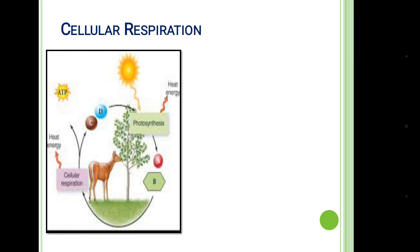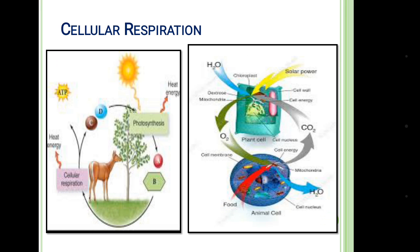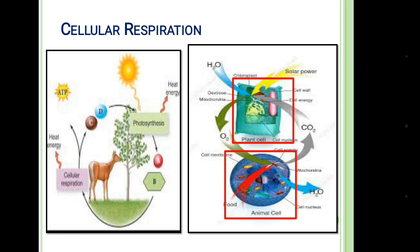So these herbivores and carnivores are utilizing this food energy for producing energy inside their body, which is called cellular respiration. And thus the energy stored inside the plant's body is taken by the animals and utilized during cellular respiration for producing energy. And in both cases, both of the organisms are releasing heat energy during cellular respiration.